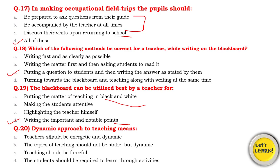Question number 20: What does the dynamic approach to teaching mean? Options: the teacher should be energetic and dynamic; the topics of teaching should not be static but dynamic; teaching should be forceful; or the student should be required to learn through activities. The topics of teaching need not always be dynamic — for example, history is static. The best option is that students learn through activities, though the teacher being energetic is also valid. We choose the best option: a dynamic approach means students should learn through activities.